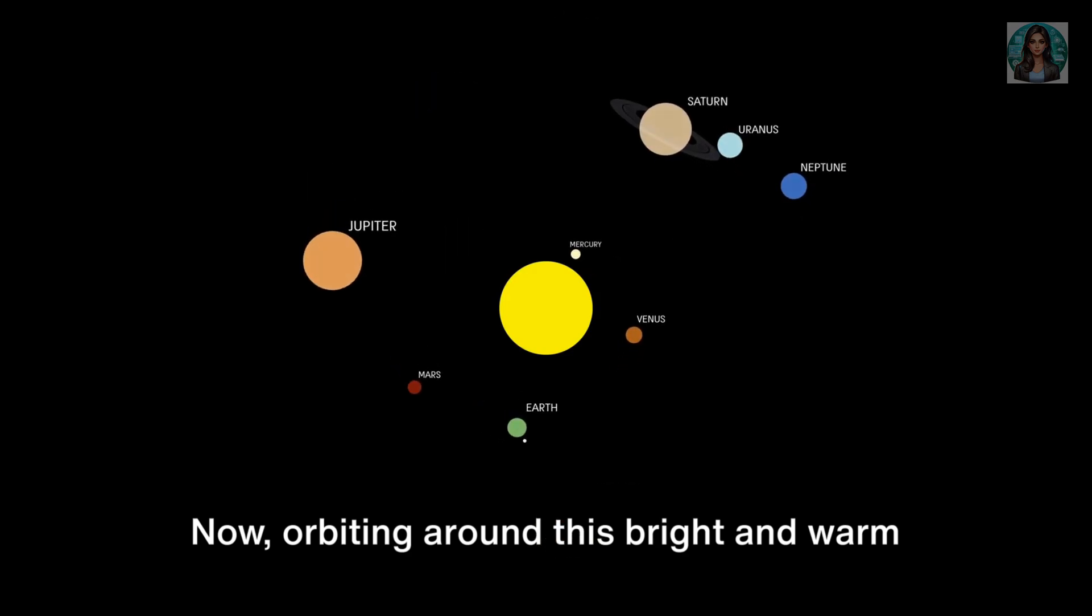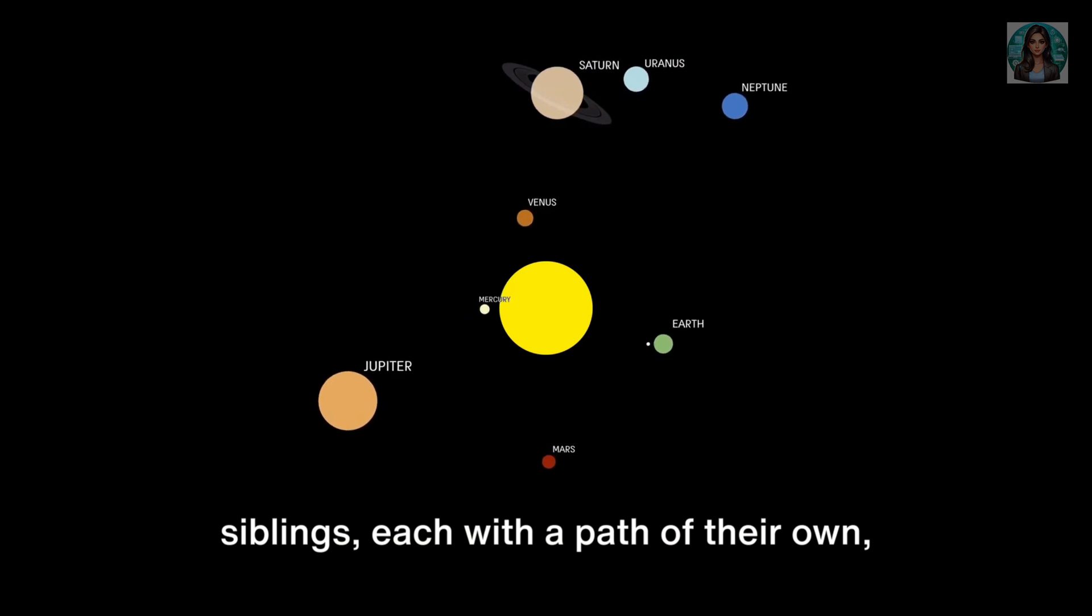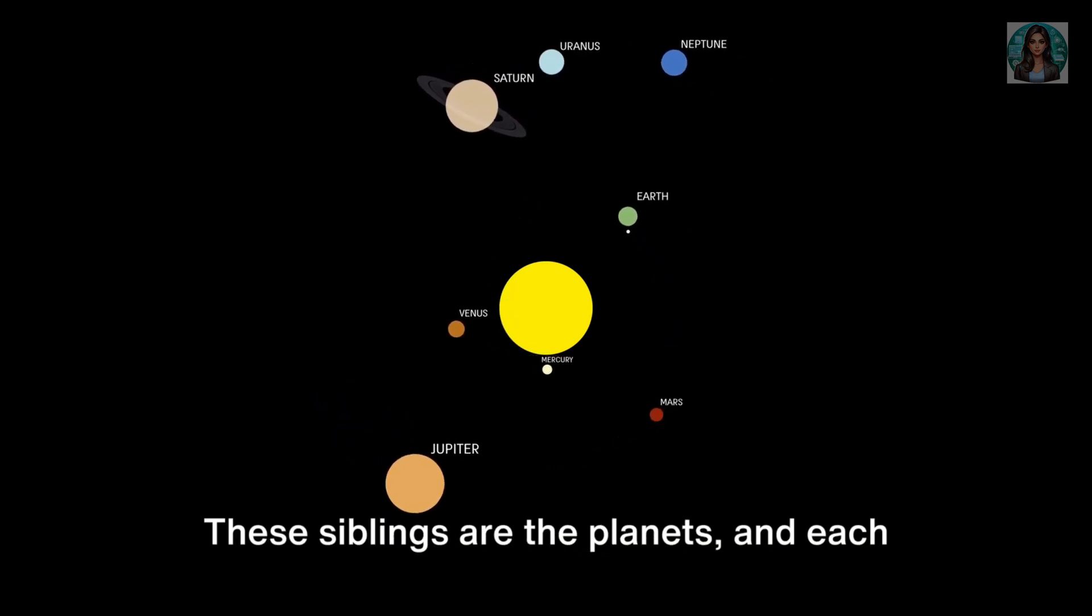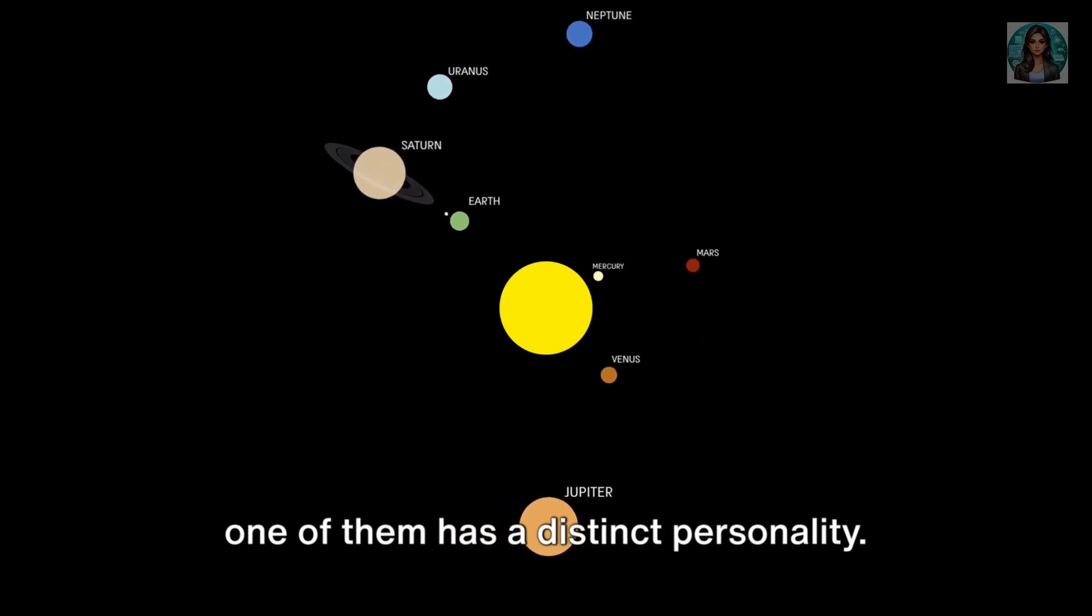Now, orbiting around this bright and warm heart of the family are eight unique siblings, each with a path of their own called an orbit. These siblings are the planets, and each one of them has a distinct personality.